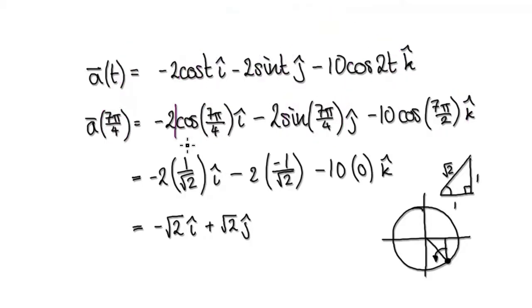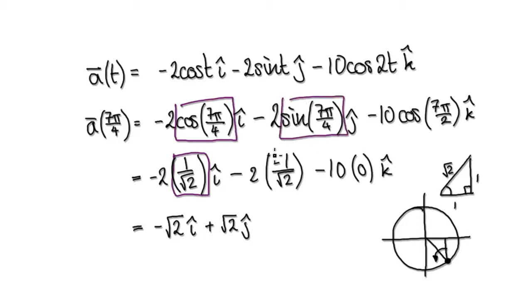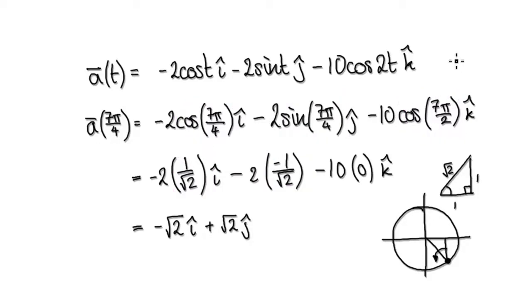We worked out in the previous video that this block here is actually 1 over root 2, and this block here is actually negative 1 over root 2. And then if you look at this term here, let's think about it more carefully.